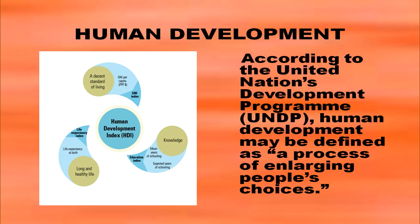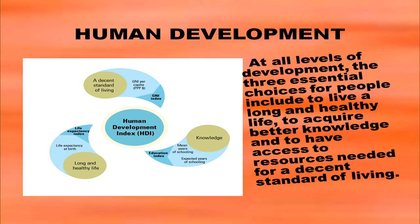There is another development indicator: human development. According to the United Nations Development Programme (UNDP), human development may be defined as a process of enlarging people's choices. As we know, economics is all about choices and how we meet them. When people's choices are enlarged, it is an outcome of human development. Very simply put, a process of enlarging people's choices is human development.